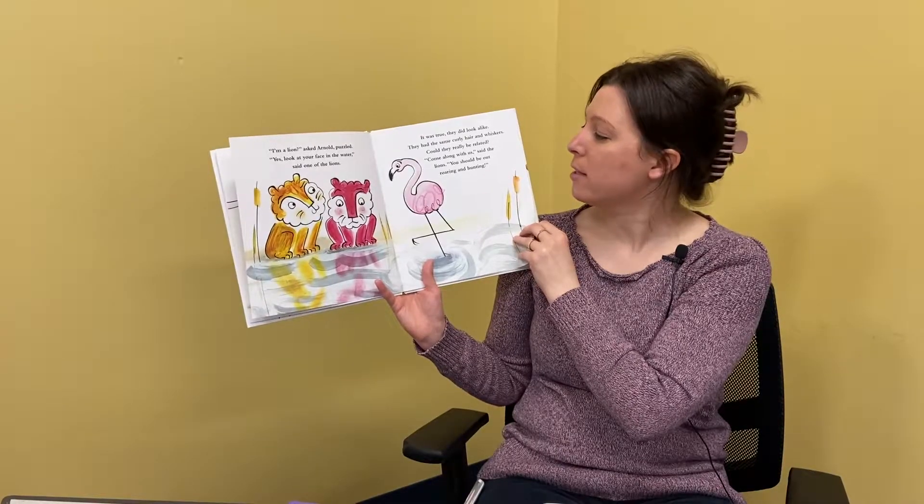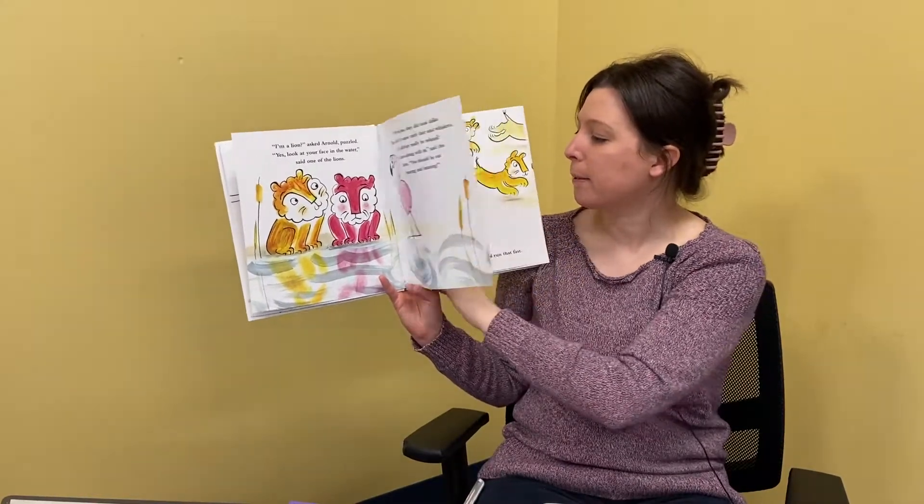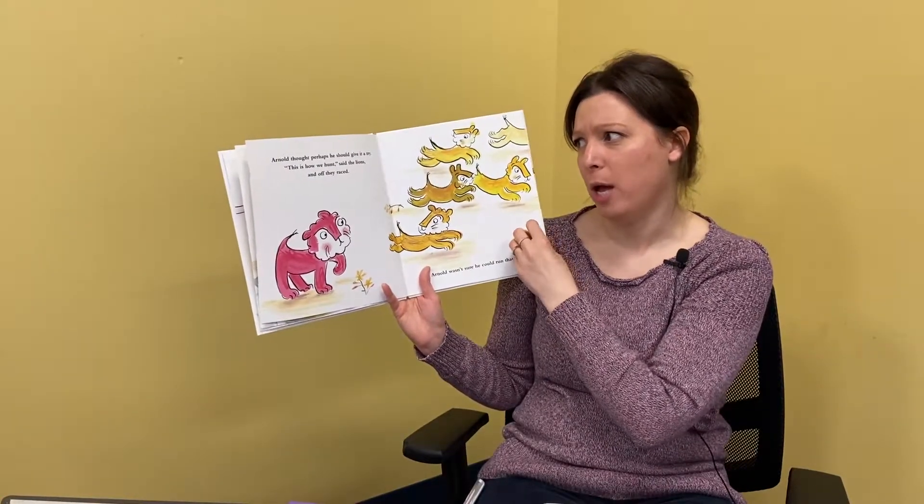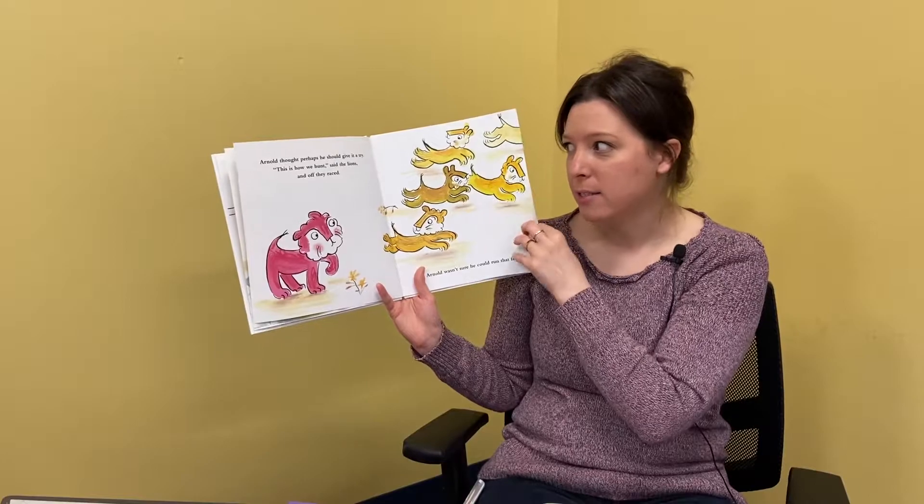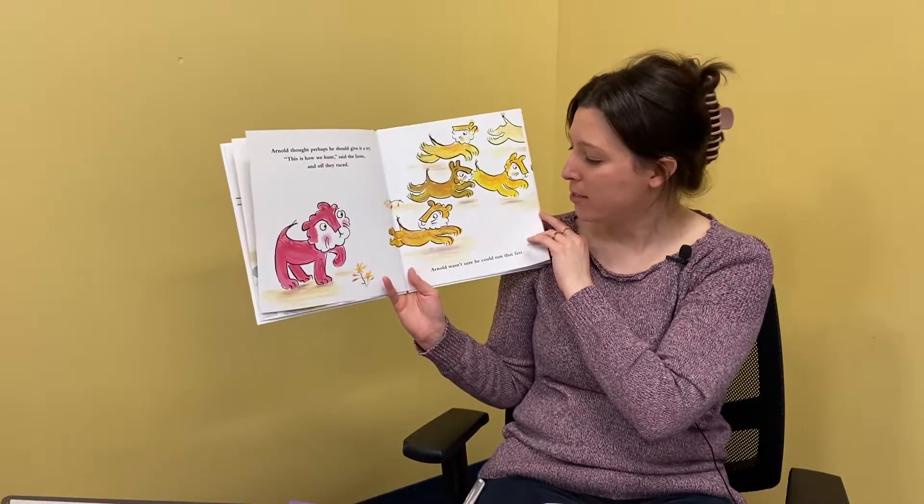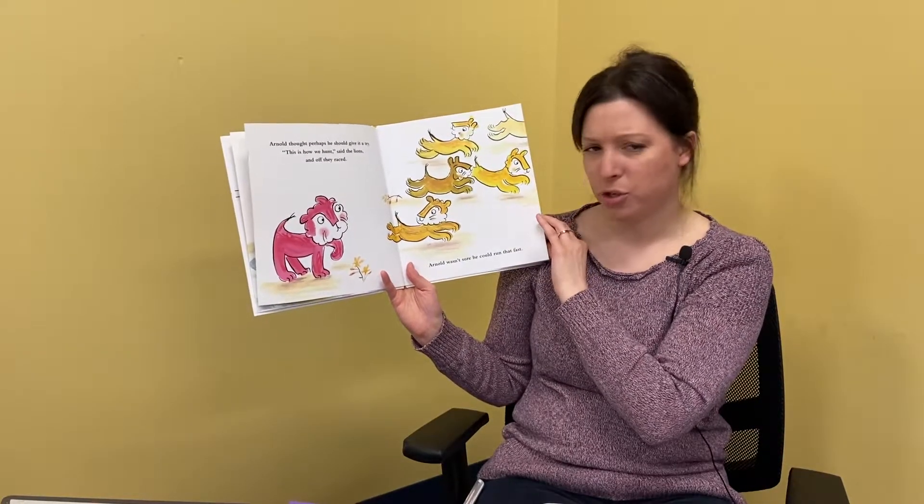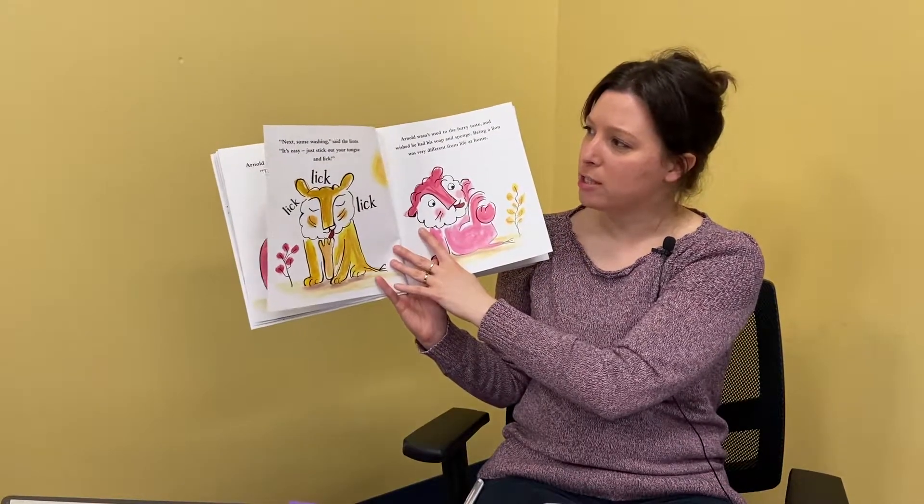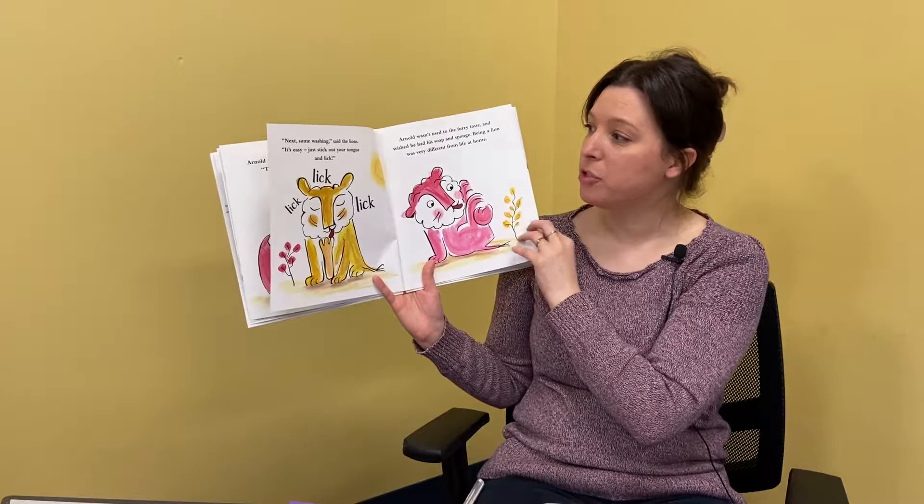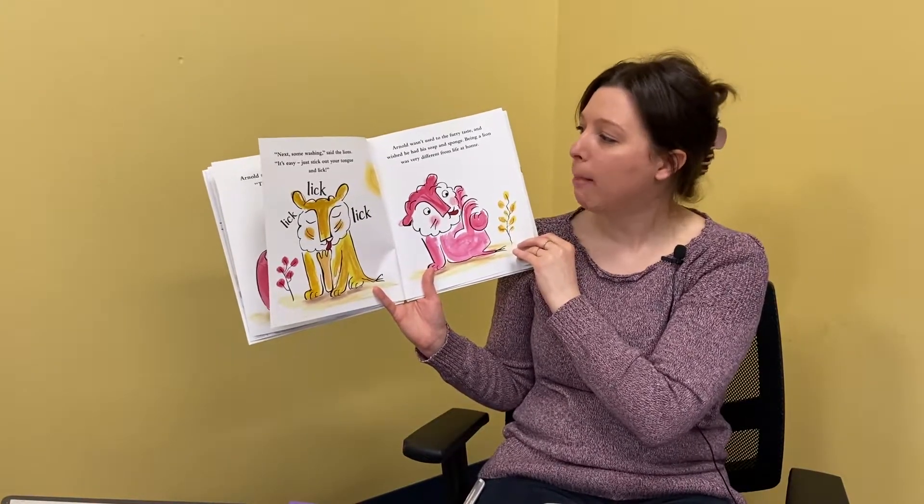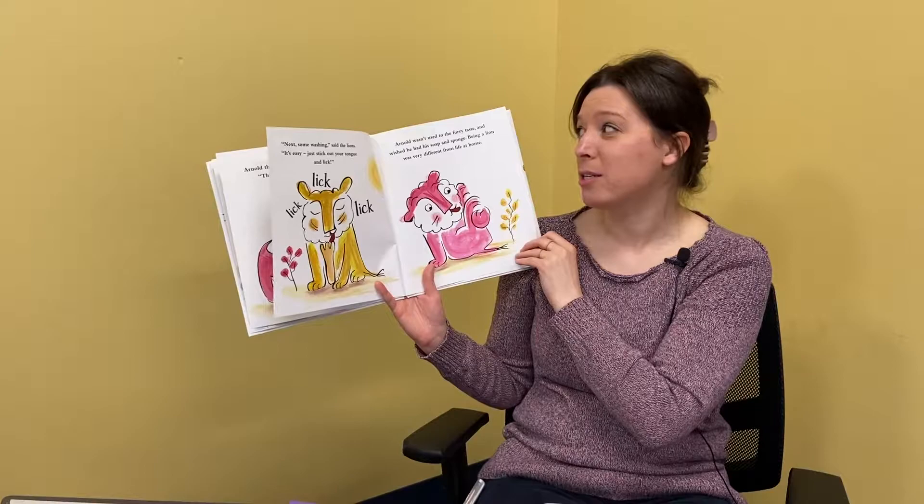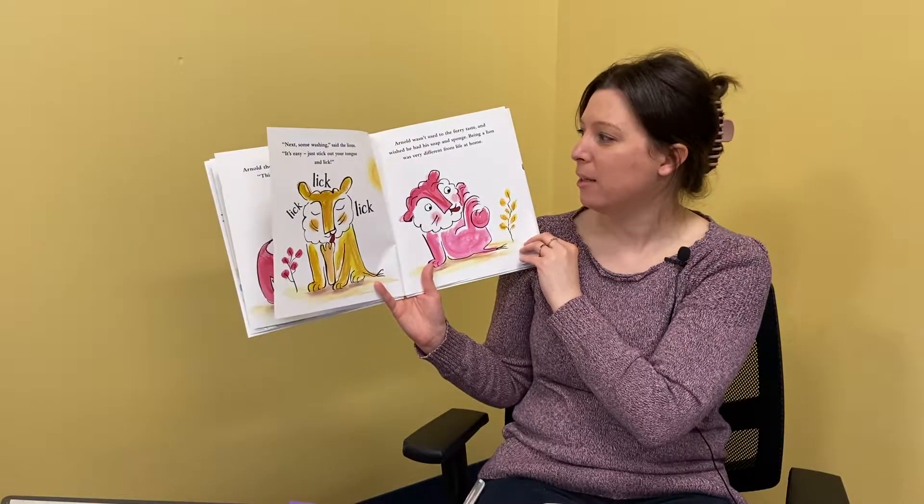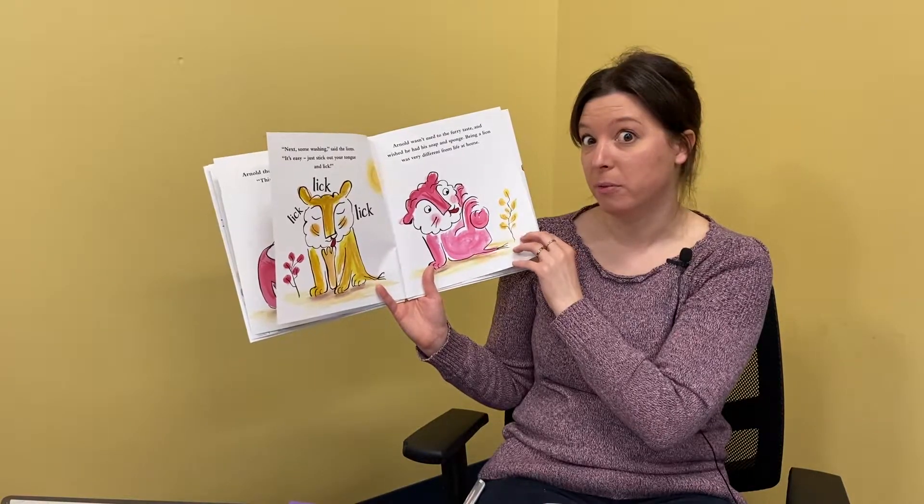Come along with us, said the lions. You should be out roaring and hunting. Arnold thought perhaps he should give it a try. This is how we hunt, said the lions and off they raced. Arnold wasn't sure if he could run that fast. Next, some washing, said the lions. It's easy. Just stick out your tongue and lick. Arnold wasn't used to the furry taste and he wished he had his soap and sponge. Being a lion was very different from life at home.